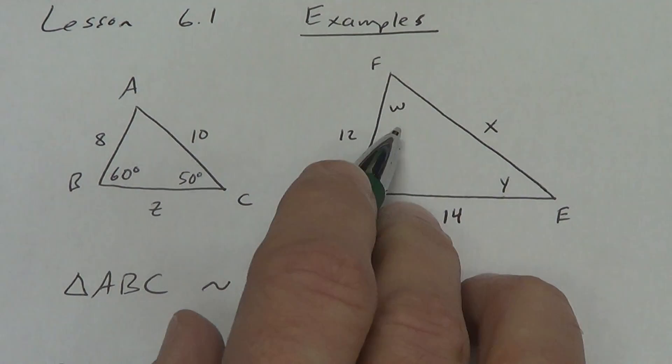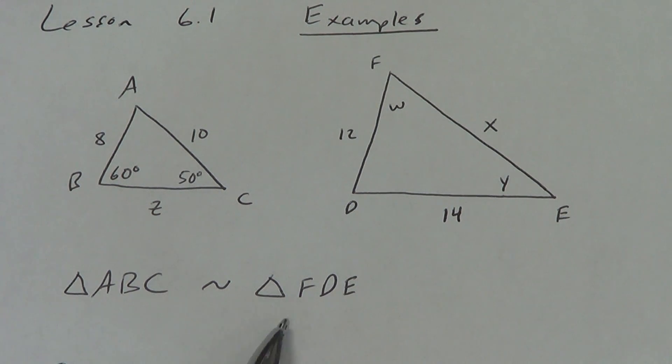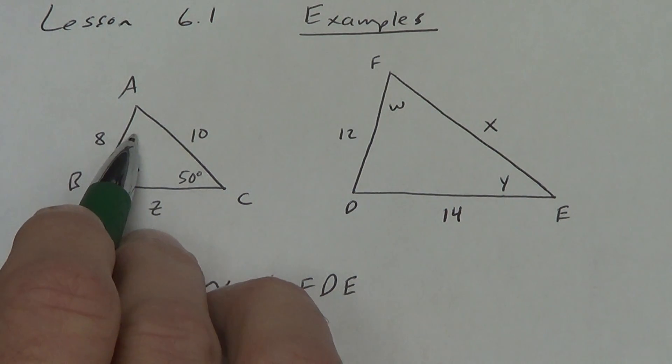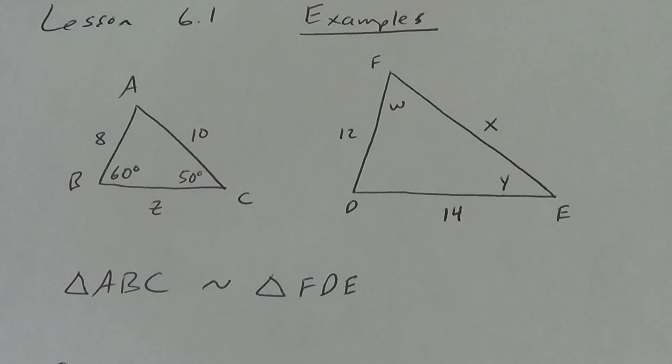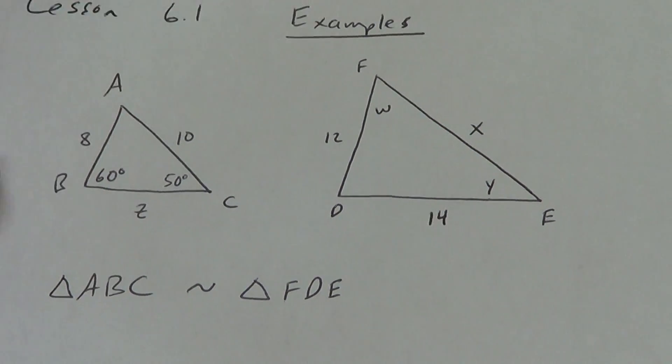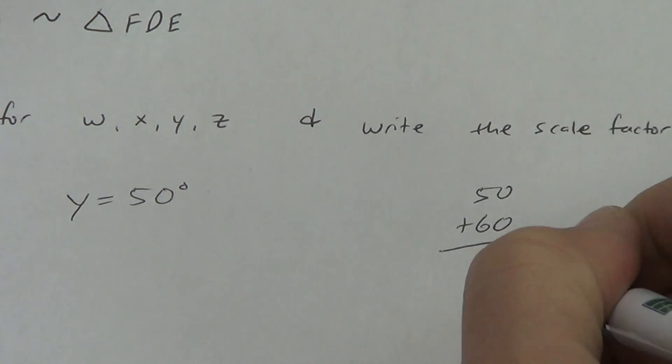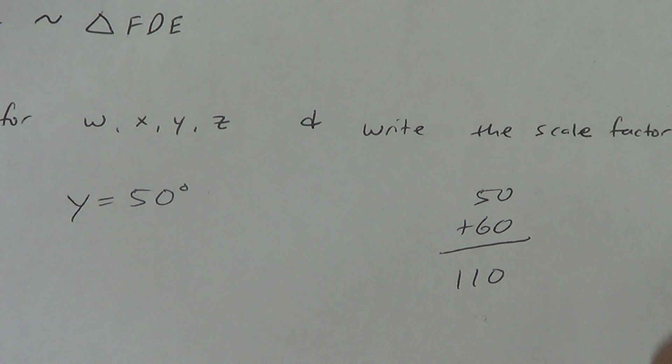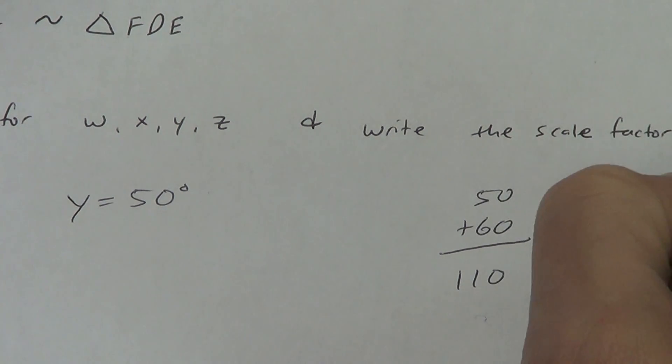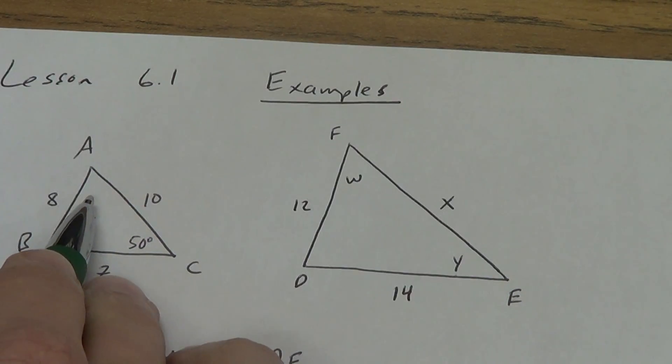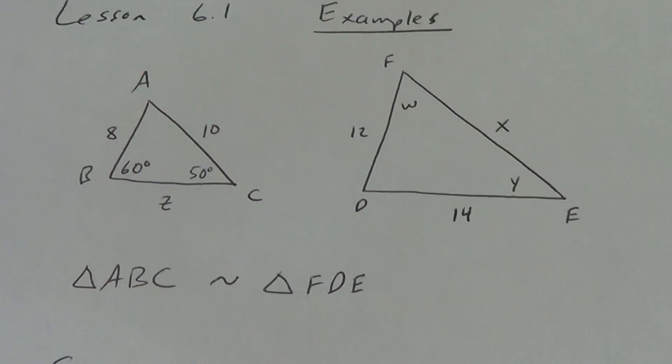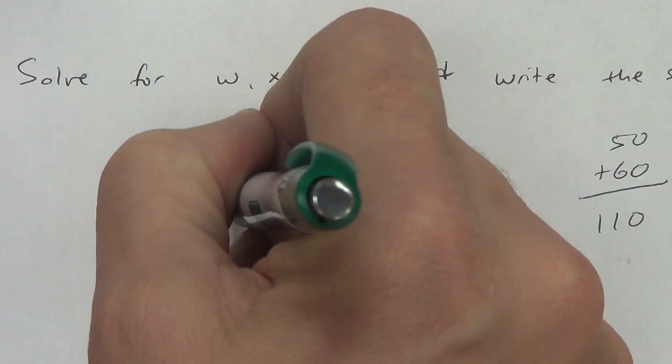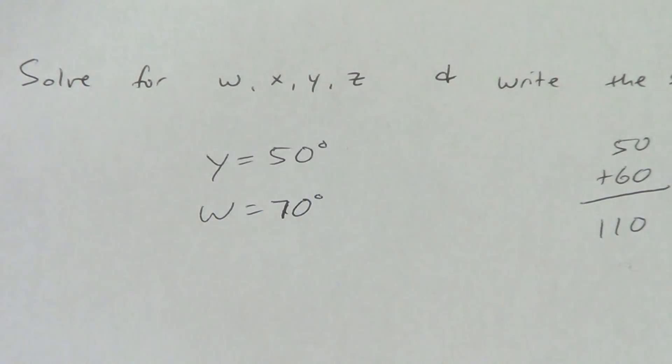The next one, I'm going to have to show a little bit of work. Let's solve for W. W matches up with F, and I know that F matches up with A. Wait, I got a slight problem. I don't know what A is. So, how do we find angle A if I know two angles in a triangle? Well, we know all three angles had to equal 180. So, let's do a little math here. 50 plus 60 is 110 degrees, and then 180 minus 110 is 70 degrees. So, we know that this angle right here is 70 degrees. Angle A matches up with angle F. So, angle F is also 70 degrees. So, therefore, I know W is 70 degrees.